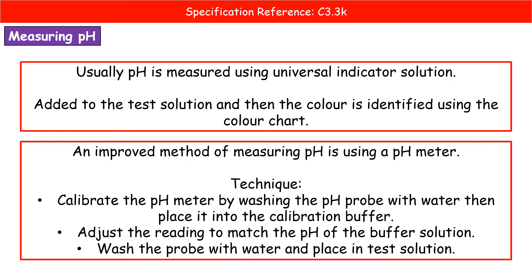This is the practical bit for those doing the foundation. To measure pH we would have used universal indicator solution or universal indicator paper in class. You add it or dip your paper into the solution and it goes a certain colour. You then try to match that colour to the printed colour chart, but there's a fair amount of guesswork as to the actual pH.